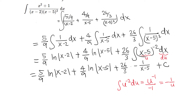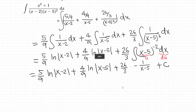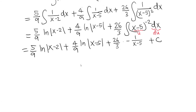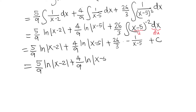Combining all three results, the final answer is: (5 over 9) times the natural log of |x minus 2| plus (4 over 9) times the natural log of |x minus 5| minus (26 over 3) times 1 over (x minus 5) plus C.